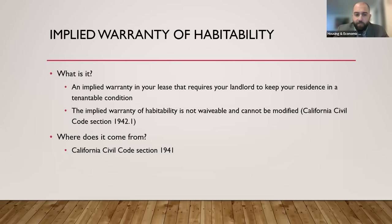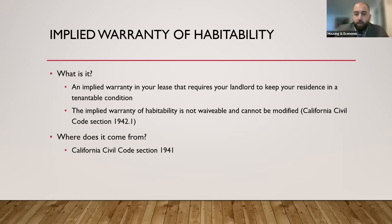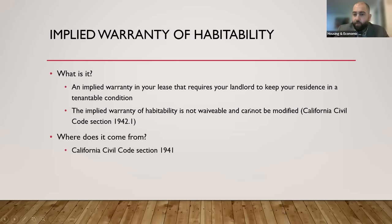Even if it's not specifically written in the lease, it still applies to every single lease. And if there's a clause in the lease that waives it — saying the tenant is responsible for keeping their apartment habitable — that's not enforceable. That part of the lease is void. This warranty comes from California Civil Code Section 1941, which requires your landlord to keep your residence tenantable.